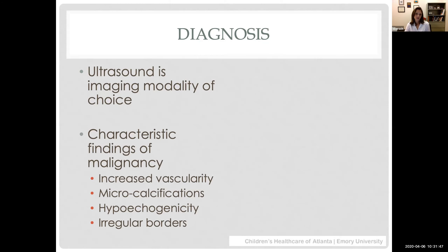TIRADS criteria are used in children the same as in adults — looking at vascularity, microcalcifications, and delineation of width and height, where they discuss taller-than-wide versus wider-than-tall characteristics, usually assessed on axial view. This can have implications for whether a nodule could be malignant, along with irregularity of borders and potential infiltrative characteristics.